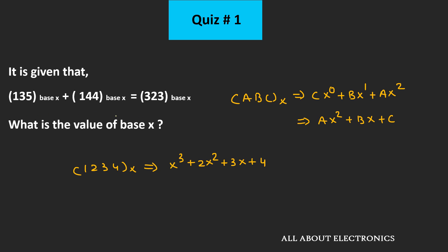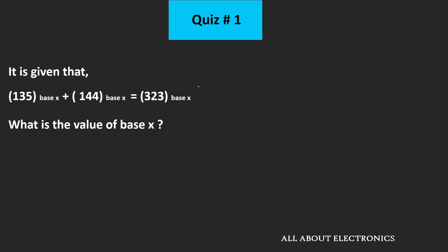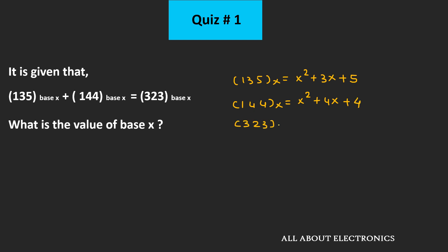So in this question, first of all, let's convert all these numbers into the decimal equivalent and from this, let's find the value of X. We can represent the number 135 as x² plus 3x plus 5. Similarly, 144 can be represented as x² plus 4x plus 4. And likewise, the number 323 can be represented as 3x² plus 2x plus 3.